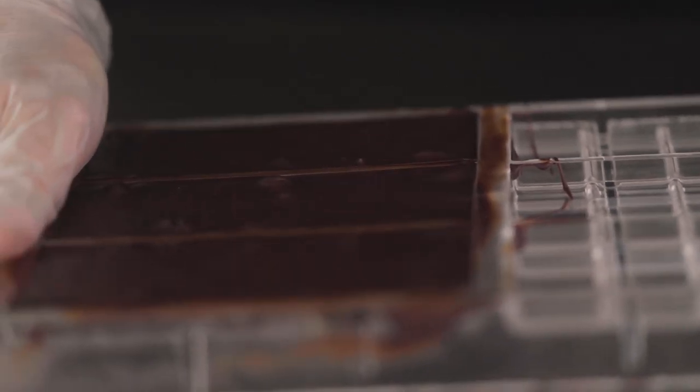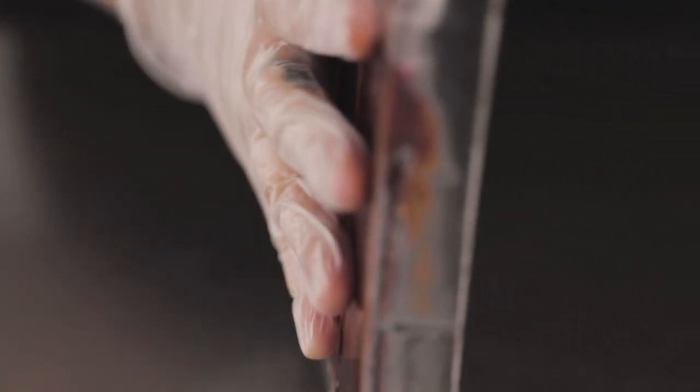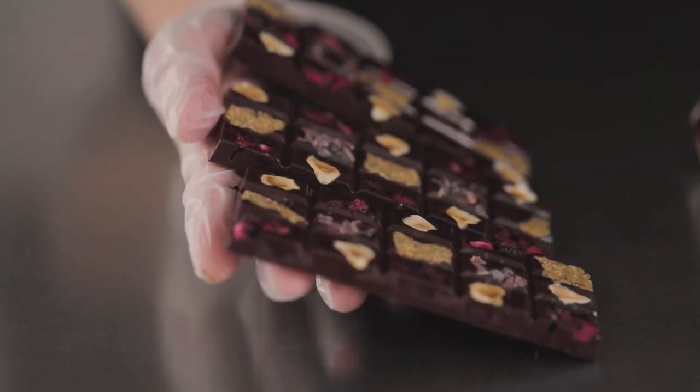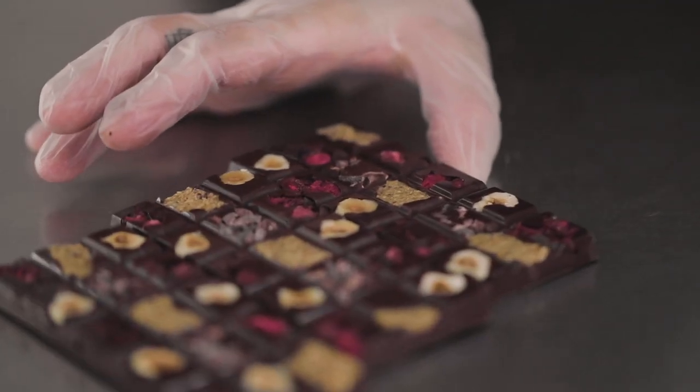To take them out of the mold, you can twist it a little bit like an ice cube tray, if it's not coming out straight away. Turn it upside down. If you need to, you can give it a gentle tap with the handle of your offset spatula, just to release the chocolate. And there you go. Beautiful textured bars with the inclusions on the surface.